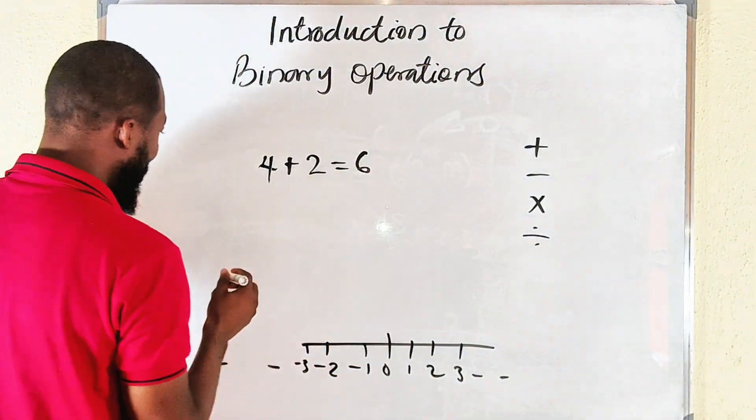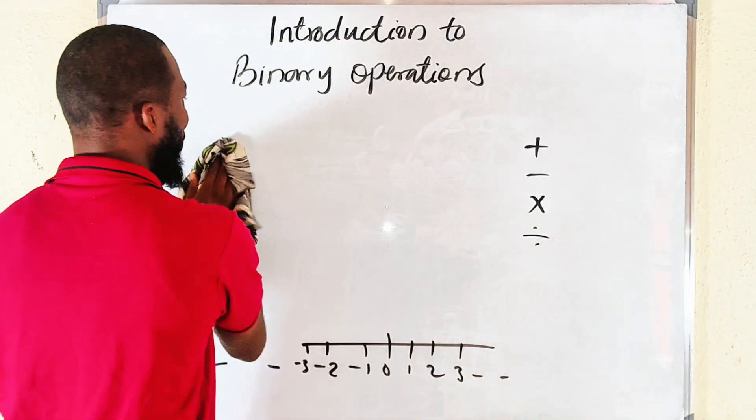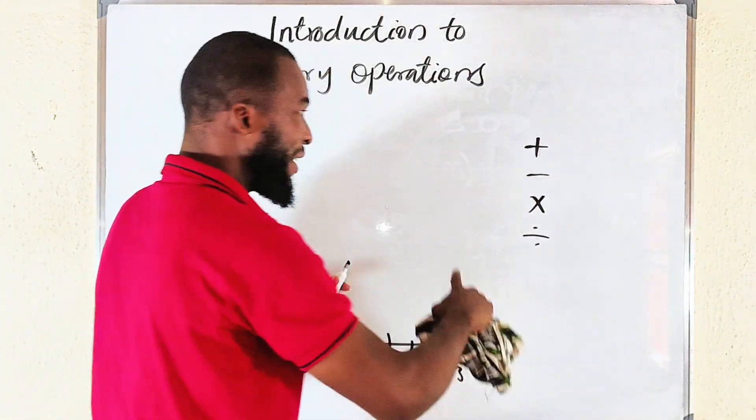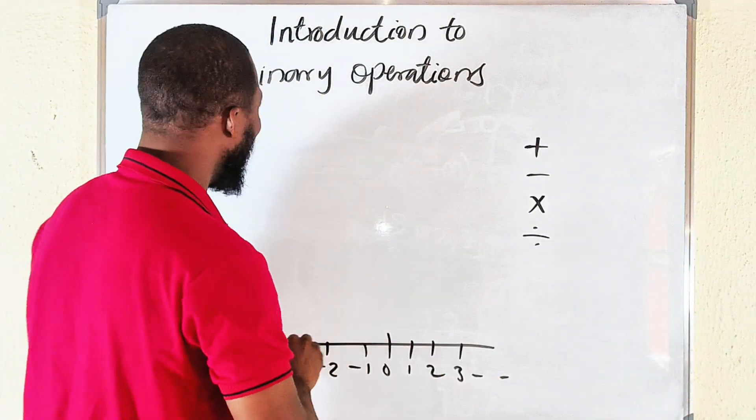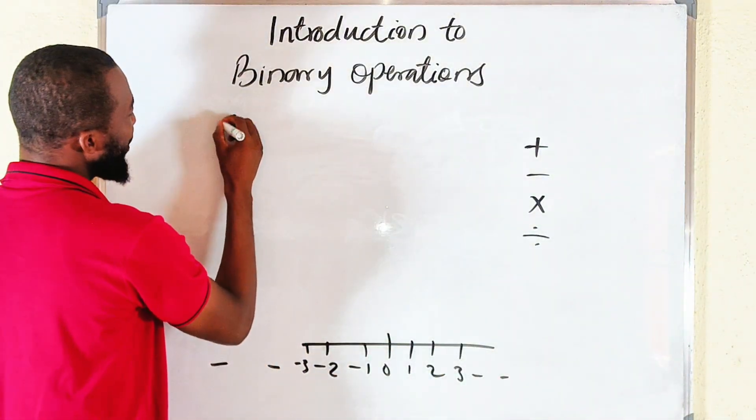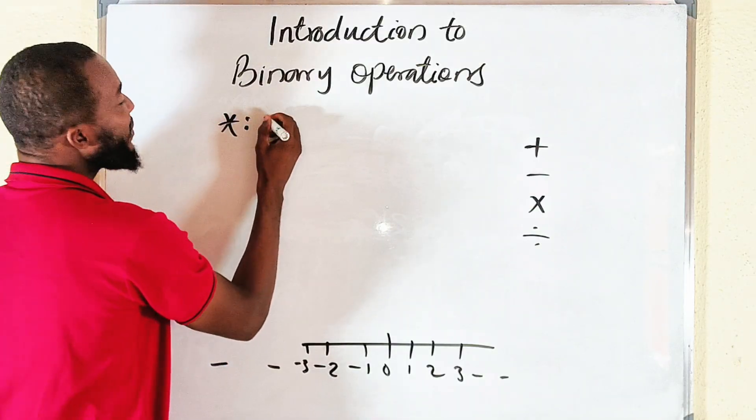And six is also a member here. Four is a member, two is a member, six is also a member. So any operation, let me define this in general, and I would like to let you know that sometimes that operation may fail.